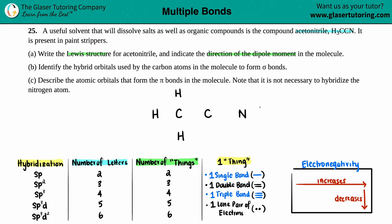Now we just have to put in the valence electrons. On the periodic table, hydrogen in group 1 always has just one valence electron, so one dot for each hydrogen. Each carbon has four valence electrons — it's in group 4A or 14 — so 1, 2, 3, 4. And then the nitrogen has five valence electrons; it's in the group right next to carbon — so 1, 2, 3, 4, 5.